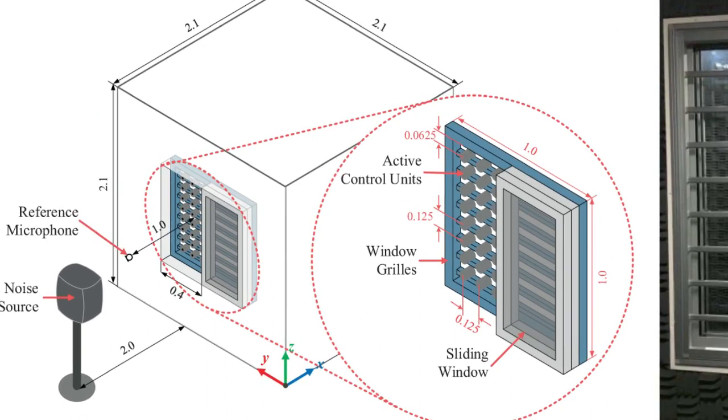The device consists of 24 loudspeakers, each 4.5 cm in diameter, fixed in a grid pattern to bars attached to the inside of a window, and one sensor located outside the window.